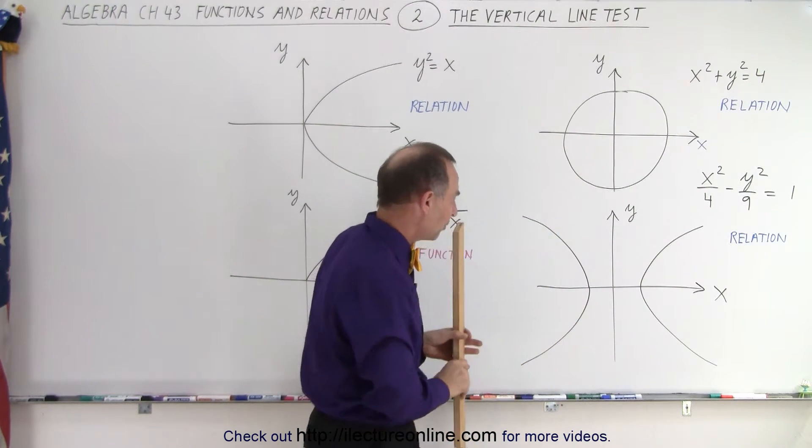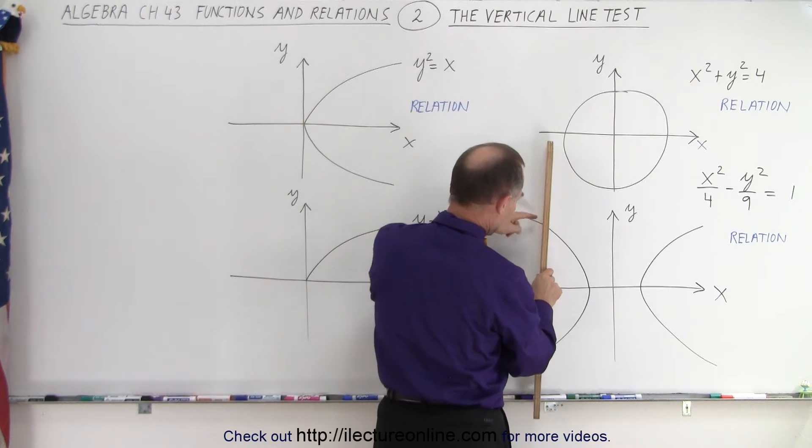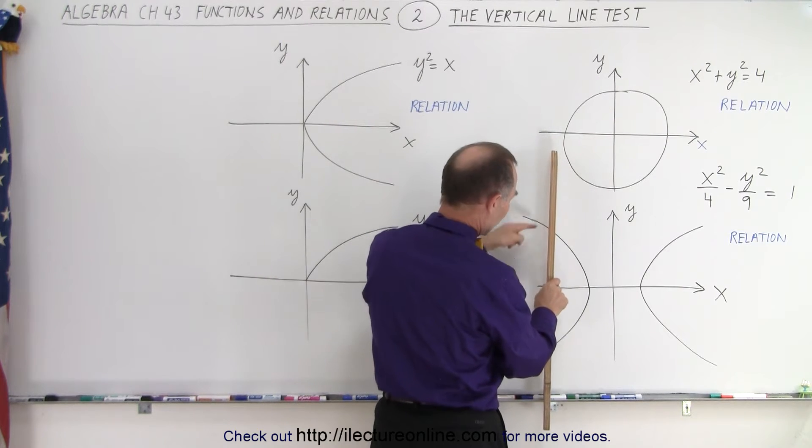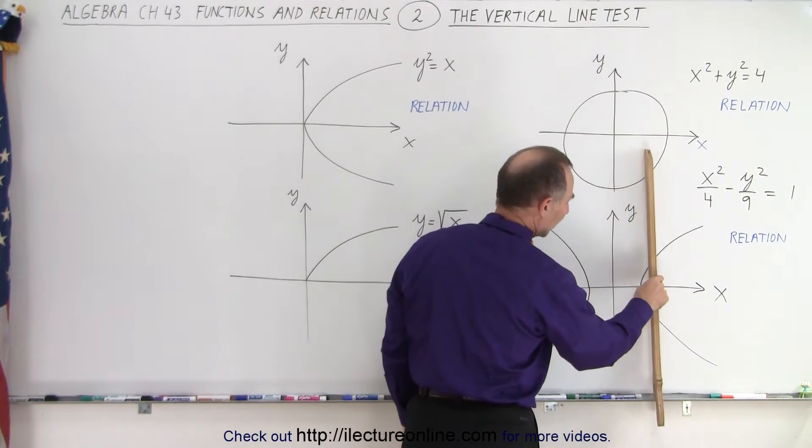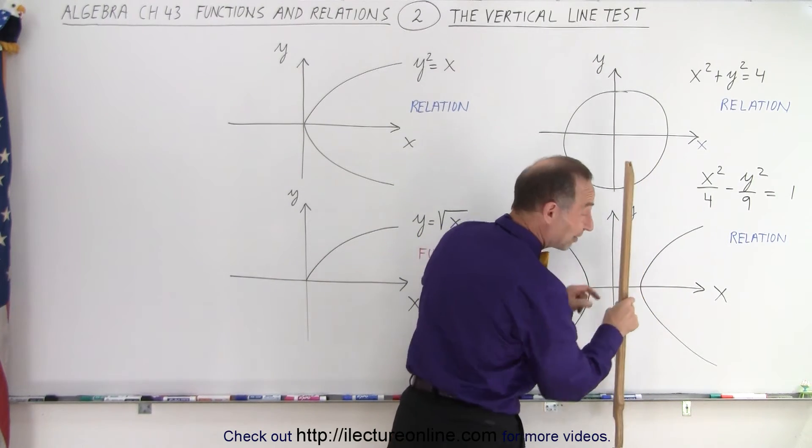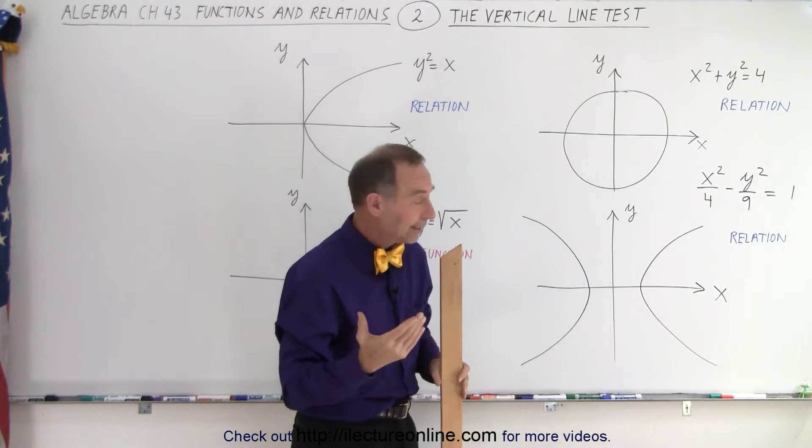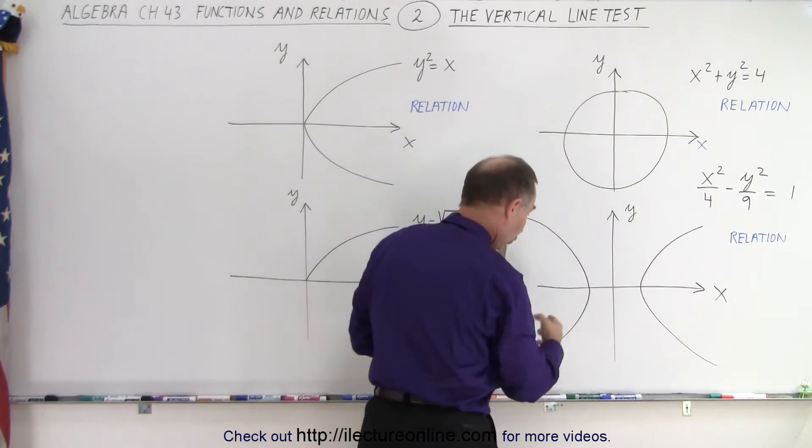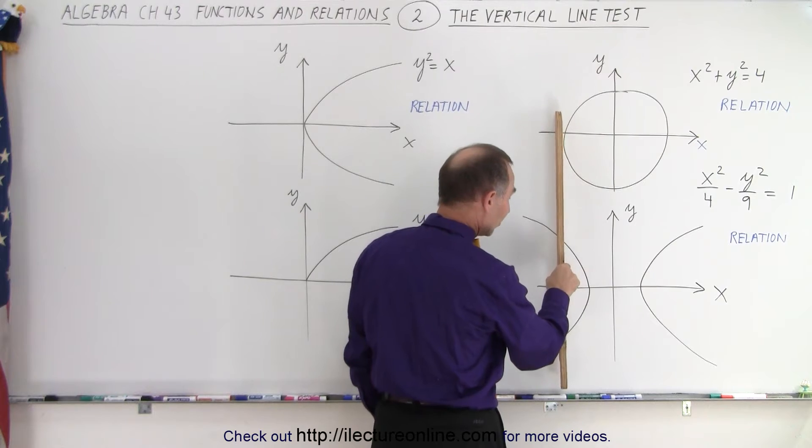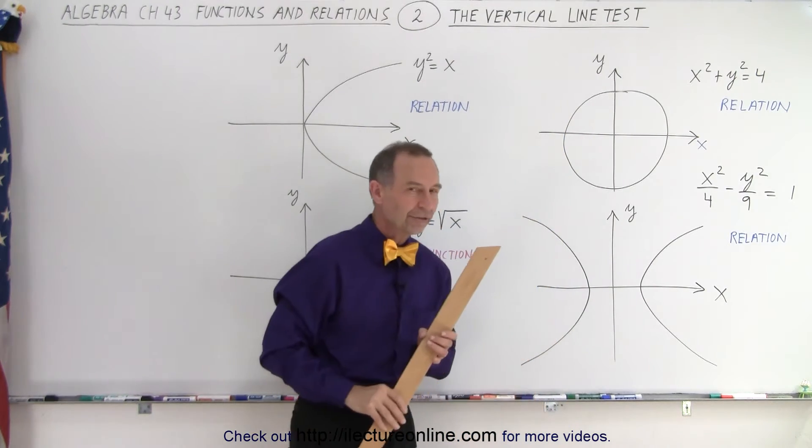The same with this hyperbola. You can see that as we go across, the line is touched twice by the curve. Here it's zero times, here it's twice. At the very tip, it's only once. But it doesn't matter—if there's any one location where the curve crosses the vertical line twice, we're dealing with a relation, not a function.